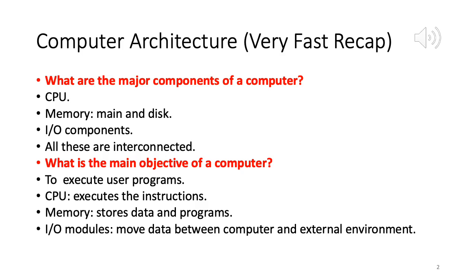Because the operating system is the software module which interacts very heavily with the hardware, it would be good to have a quick recap of computer organization and architecture — what the different parts of a computer are, what they do, and how they interact with each other in order to execute user programs.